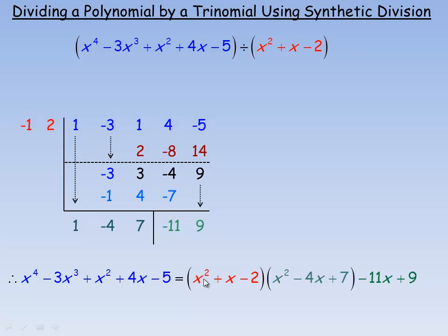So one way to write out the division statement is the polynomial we started with, the quartic, x to the fourth minus 3x cubed plus x squared plus 4x minus 5, would equal the product of, and it's basically this times this plus the remainder. So the x squared plus x minus 2 times the x squared minus 4x plus 7, and the remainder is negative 11x plus 9.